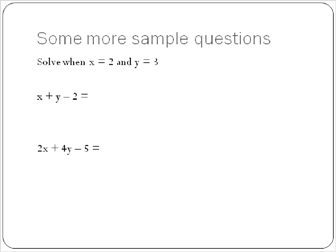Our questions are going to become a little bit more complicated here — we're going to have an x and a y. So x is equal to 2 and y is equal to 3. We're just going to plug in the numbers just like we did before: where you see an x, you put in 2; where you see a y, you put in a 3. So what we have is 2 plus 3 minus 2, and 2 plus 3 is 5, minus 2 is equal to 3.